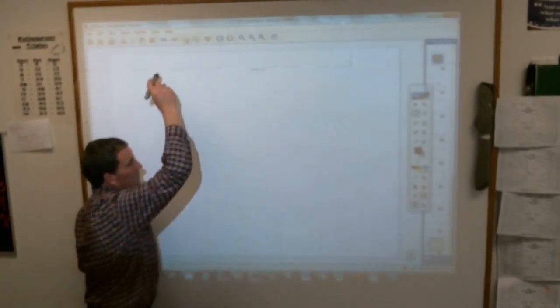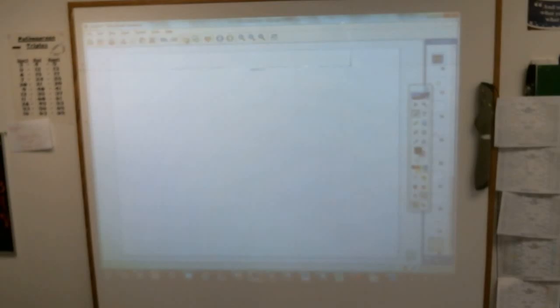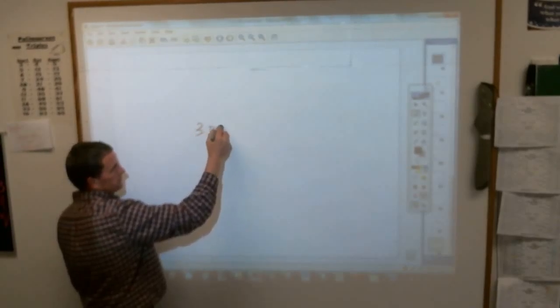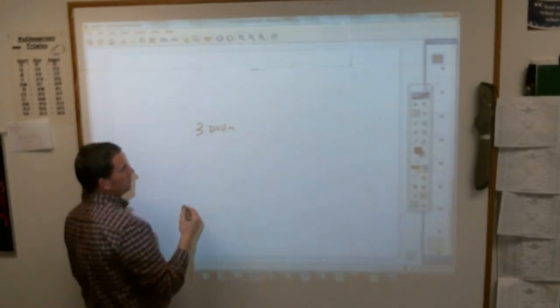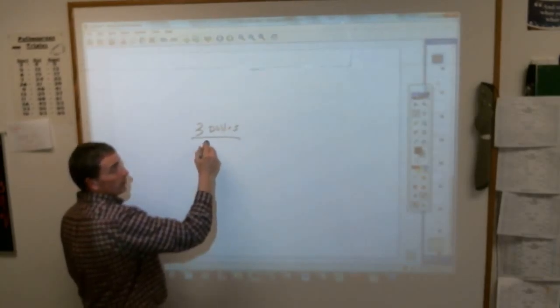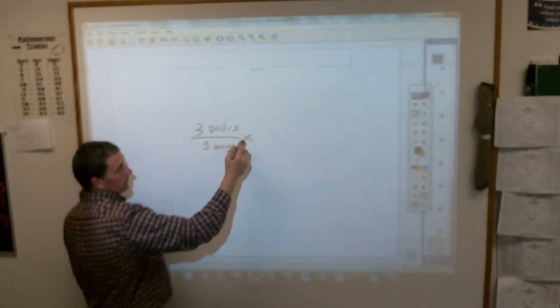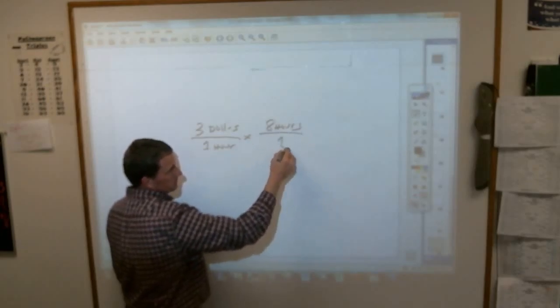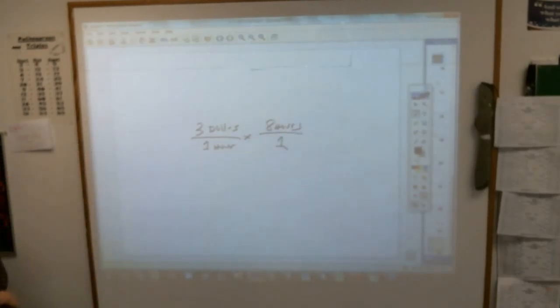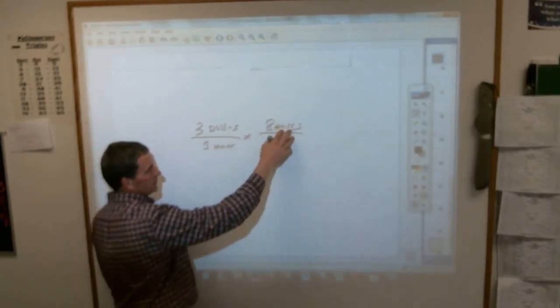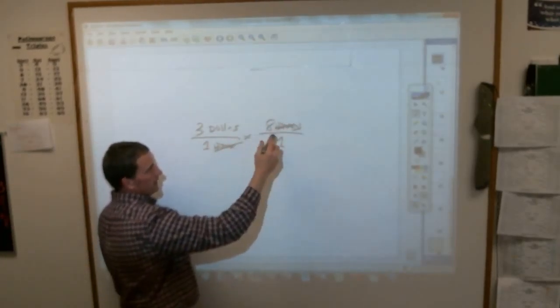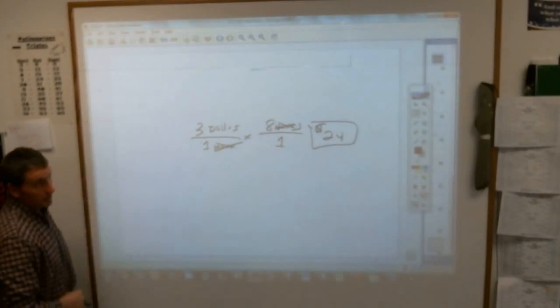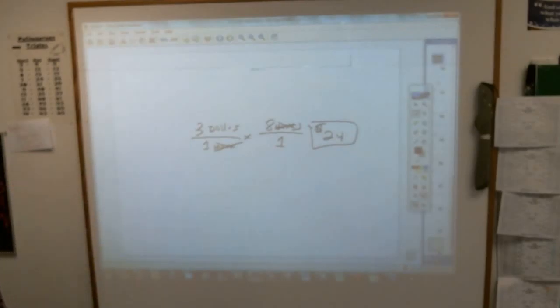But you can't just write down the numbers. You have to put the labels down as well. Another example would be if you make $3 per hour and you work for eight hours, what's going to cross off? The label hours. And that means you make eight times three, twenty-four dollars. Hours are gone. You don't have to say the word hours. It's gone.